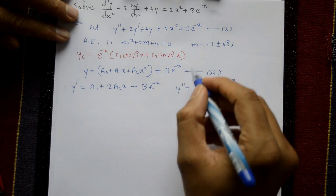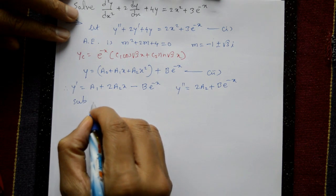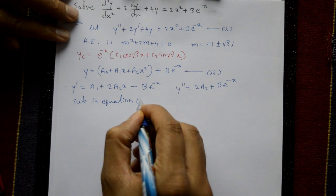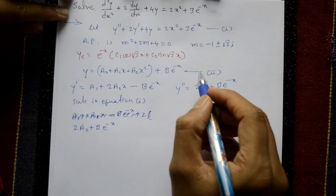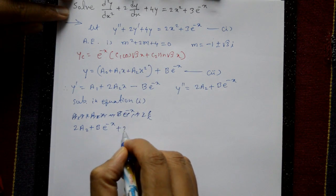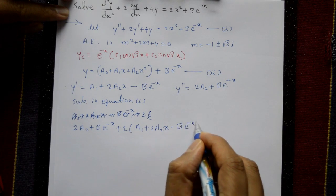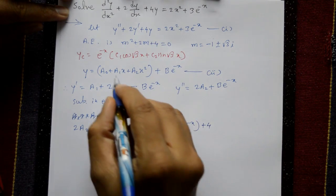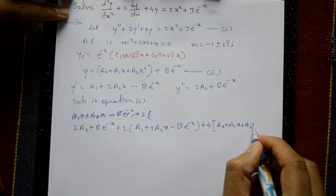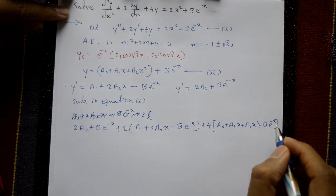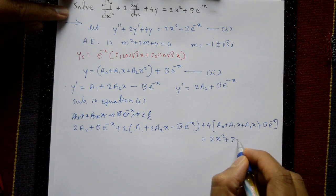Now substitute y, y', and y'' into equation number one. This gives: (2a₂ + Be^(-x)) + 2(a₁ + 2a₂x - Be^(-x)) + 4(a₀ + a₁x + a₂x² + Be^(-x)) = 2x² + 3e^(-x).